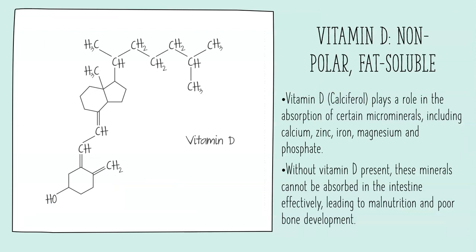Vitamin D is non-polar. Looking at its structure — which is also in your data booklet — we can see it's largely hydrocarbon chains with some ring structures and only one hydroxyl functional group, which limits how it can interact in an aqueous environment. This large hydrophobic, non-polar molecule accumulates in lipids. It plays a role in absorption of micronutrients including calcium, zinc, iron, and magnesium. Without enough vitamin D, these don't have sufficient uptake, so calcium intake must go along with adequate vitamin D for healthy bones.